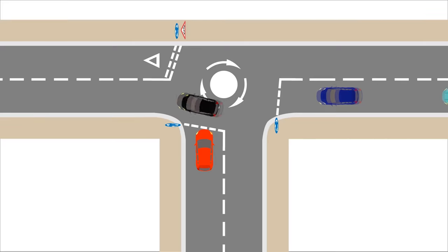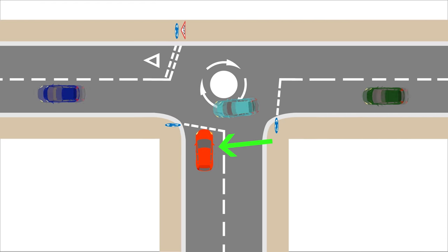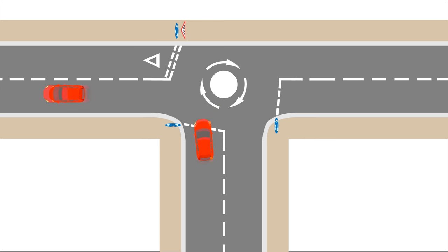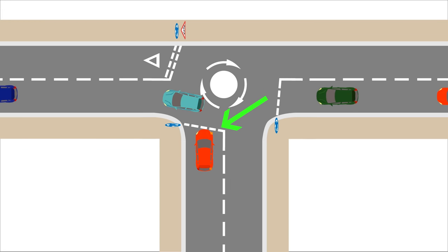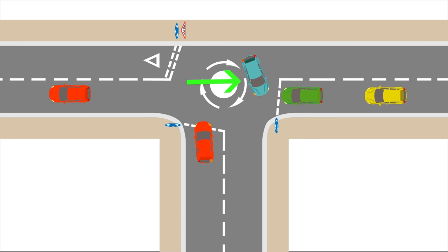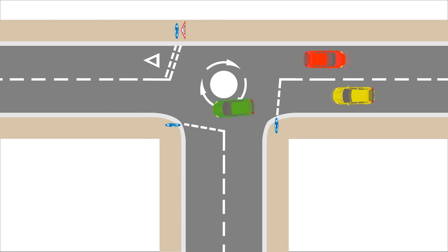Here are some examples of when you should go and wait at mini roundabouts. In this example, you can see that the orange car needs to wait for cars coming from the right. When there are no longer cars coming from the right, the orange car can go. On this occasion, the orange car again needs to wait for cars from the right, but this time a blue car comes from the left. The blue car acts as a shield, giving the orange car enough time to go.